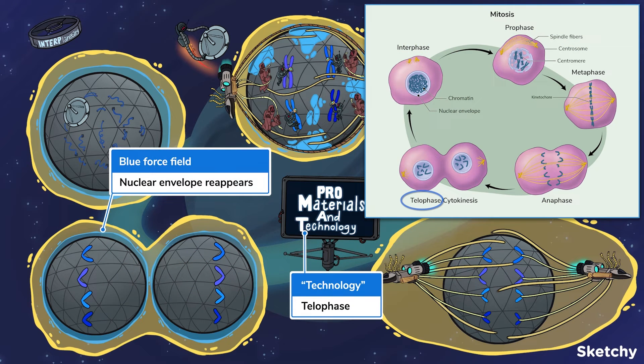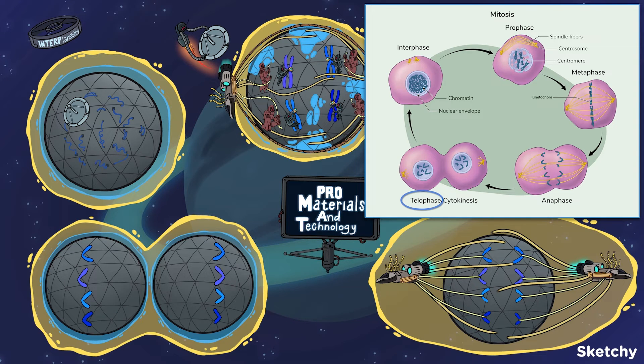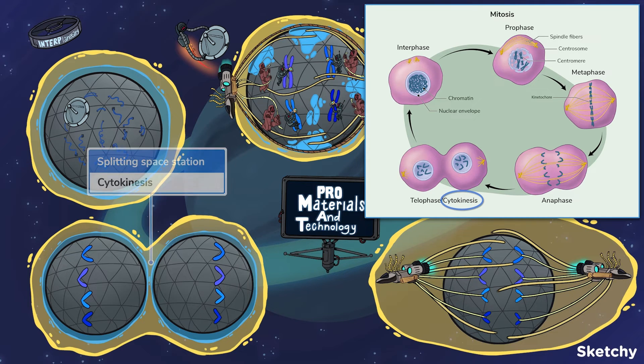In telophase, the spindle fibers disappear and the nuclear envelope forms again. Alright, despite completing mitosis, we still need to separate the cytoplasm and organelles into two daughter cells. This is known as cytokinesis. During cytokinesis, an actomyosin ring made up of actin, myosin, and other proteins pinch down on the cell to create a cleavage furrow, allowing the cells to finally separate. And that, my friends, is how you split a station.